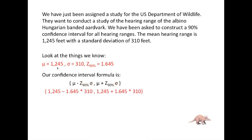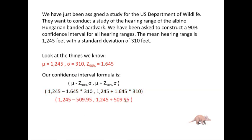We've plugged into this formula the values of Mu, the values of sigma, and the values of Z for 90%. Now, all we have to do is work through the formula. The first thing you do is multiply, and once you multiply, then you do your subtraction and addition. We have established that 90% of these hearing ranges lie between a lower bound of 735.05 and an upper bound of 1,754.95 feet.